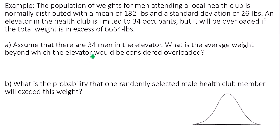Assume there are 34 men in the elevator. What is the average weight at which the elevator would be considered overloaded? So average weight means I have to take the 6,664 pounds and divide it amongst the 34 people. If the average weight was 196 pounds among those 34 people, then the elevator would be overloaded.